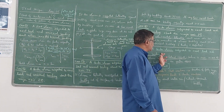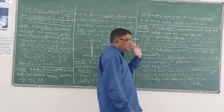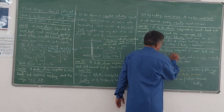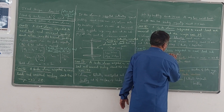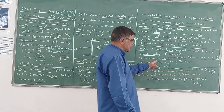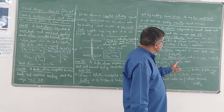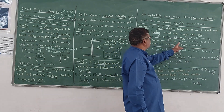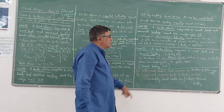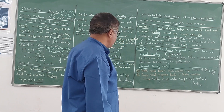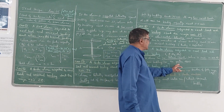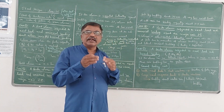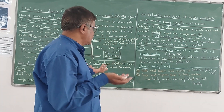The last case is Case 5: a slender column subjected to axial load and biaxial bending, meaning all three — P, My, and Mz — are present. If the column has no lateral support, failure is the same as Case 4 — a combination of column buckling about the YY axis and lateral torsional buckling including twisting and deflection — with minor axis buckling having the greatest effect.